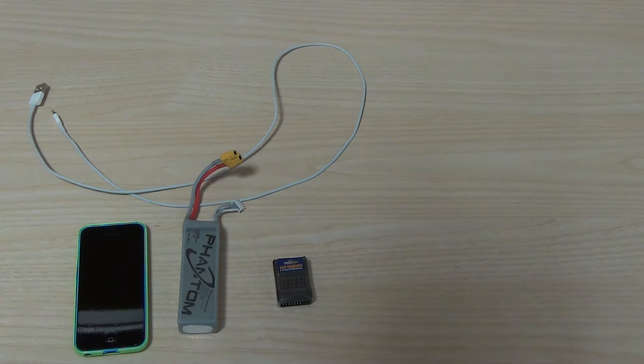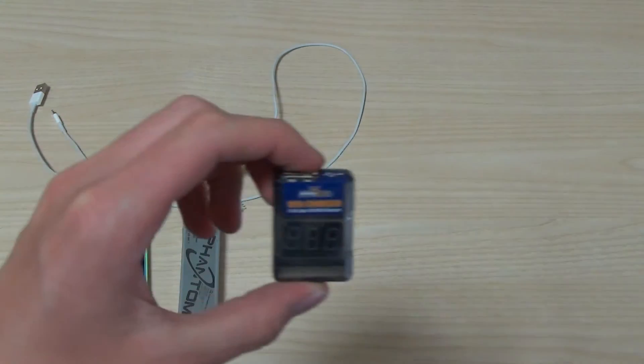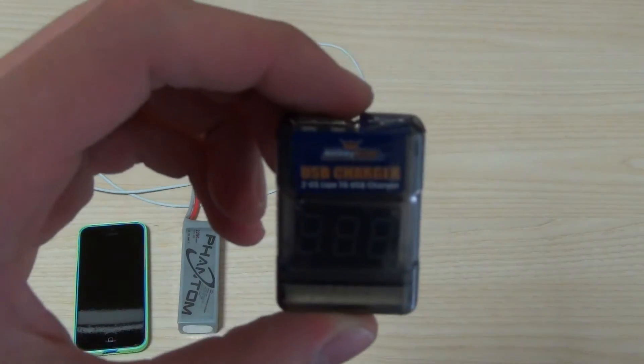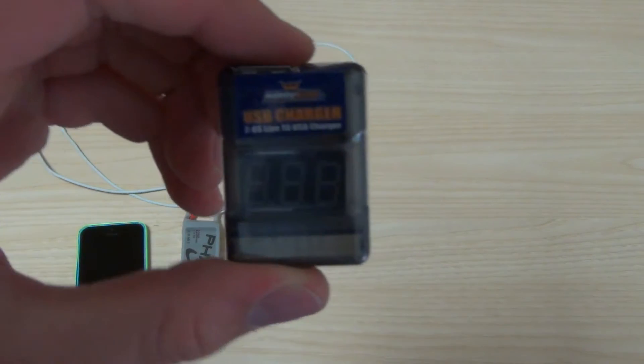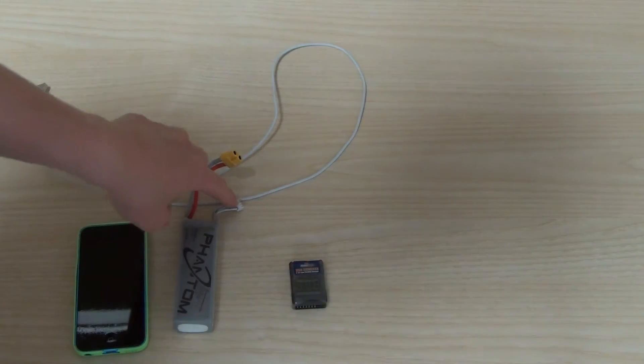Hi guys, this is Oli from Bird's Eye View and today we're going to be having a look at Hobby King's little charging device. This basically allows you to plug the balancing port from your quadcopter battery into the device.